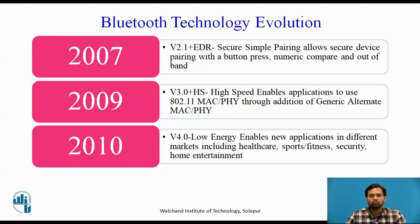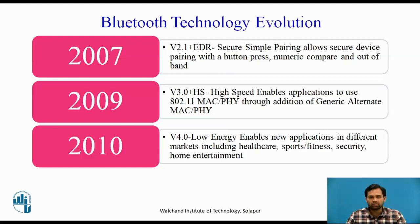Now we will see Bluetooth technology evolution. Bluetooth was invented in 1998 and after that different versions were evaluated. In 2007, version 2.1, called Secure Simple Pairing, was introduced, which allows secure device pairing with a button press, Numeric Compare, and Out of Band.